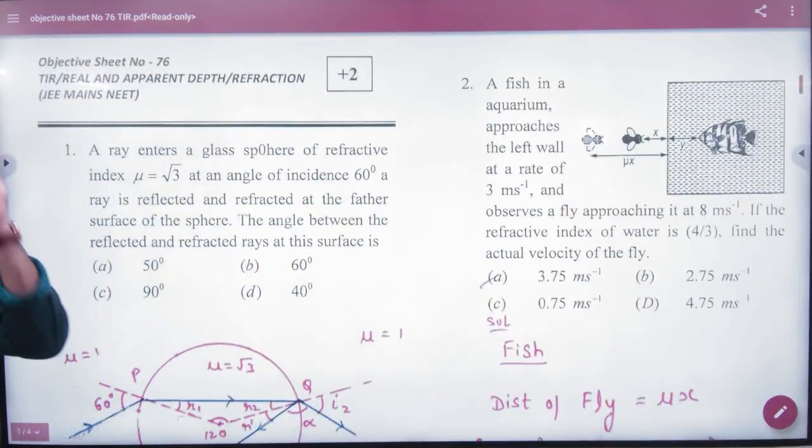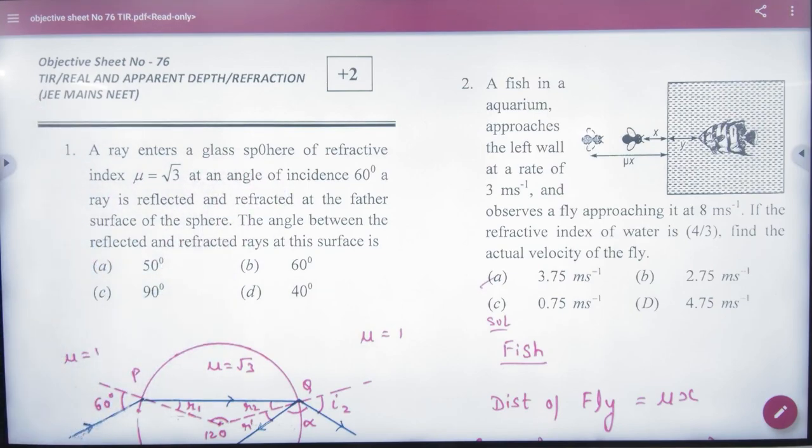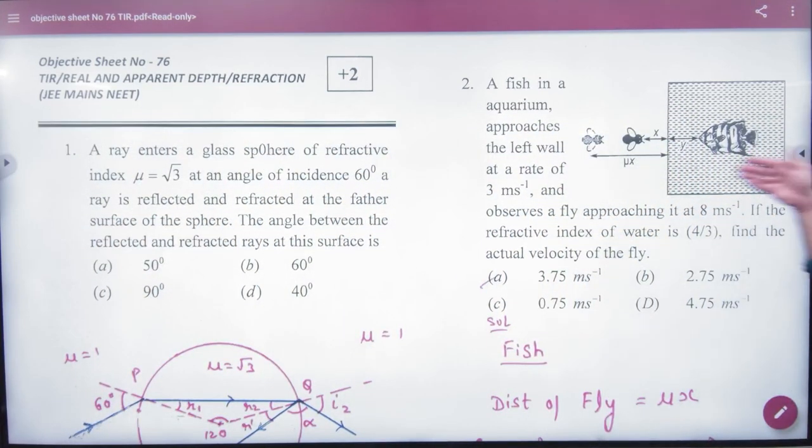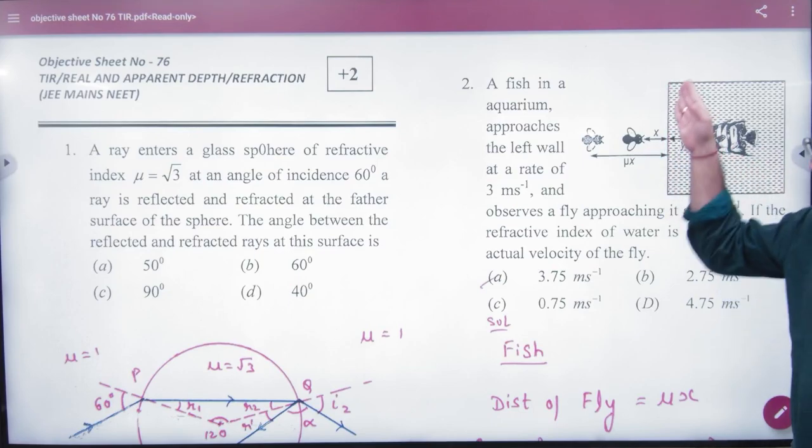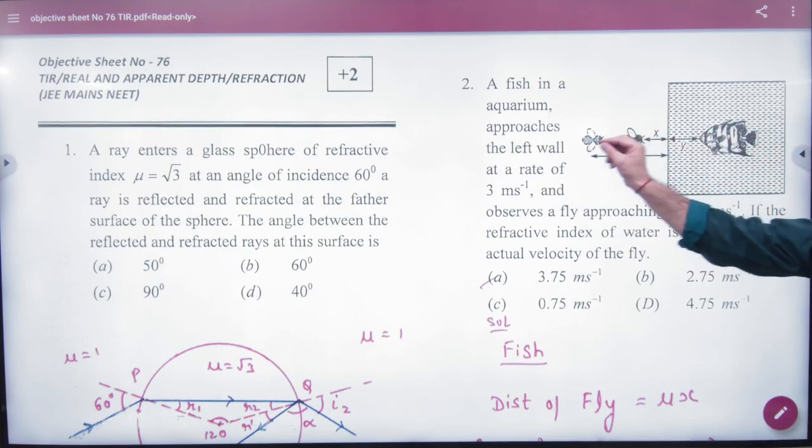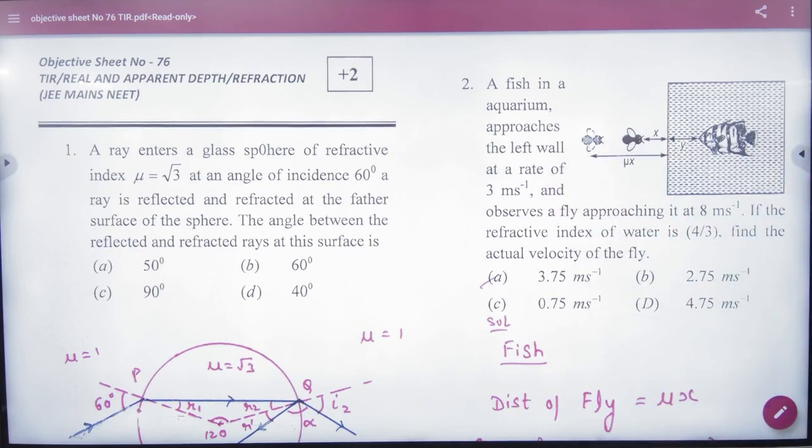Question number one, try it yourself. Question number two, I would like to discuss this. This is a neat and main question. When you take the old paper, you will have to look at the neat diagram. What is the question? The question is that you have a fish, and the fish is on the left side of the aquarium.